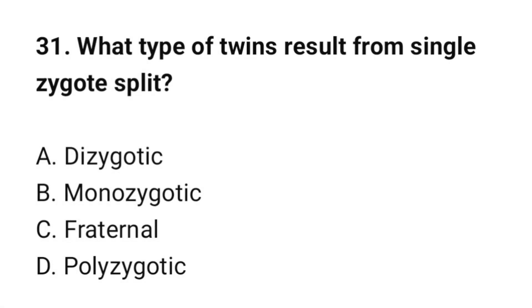Question number 31. What type of twins results from a single zygote split? The correct option is B: monozygotic.